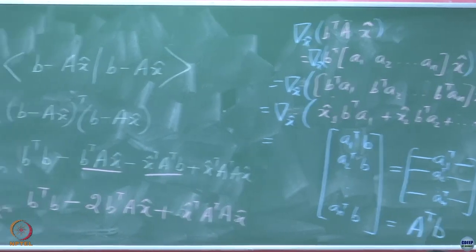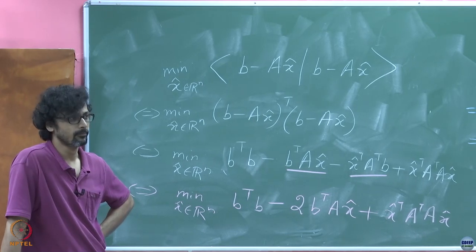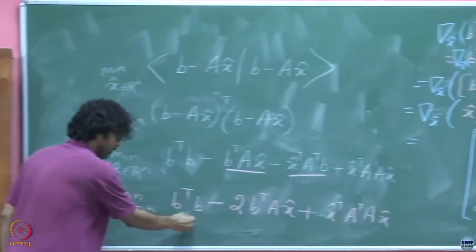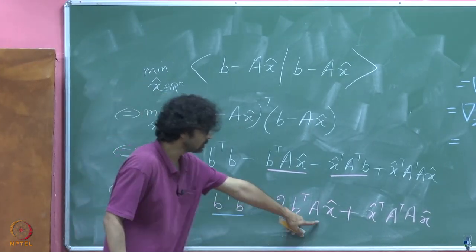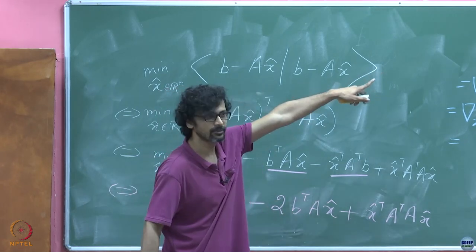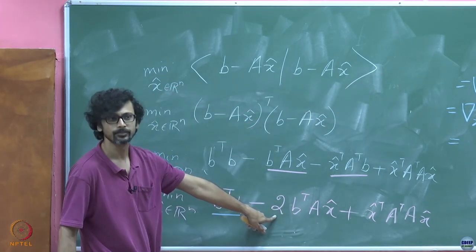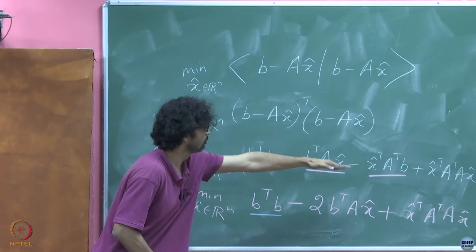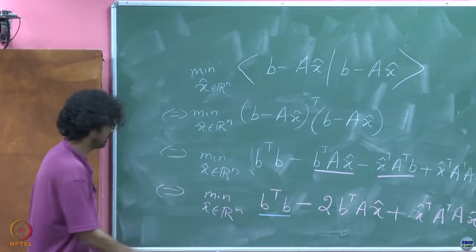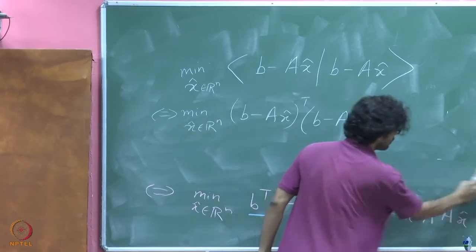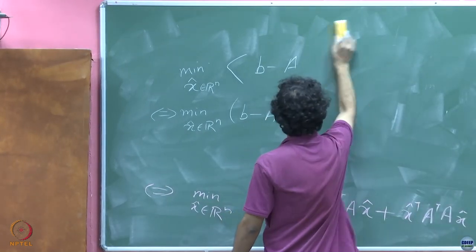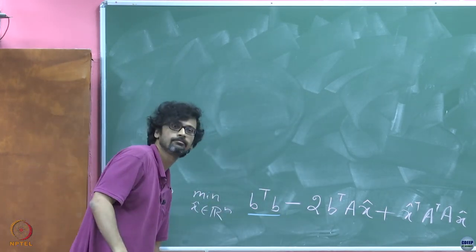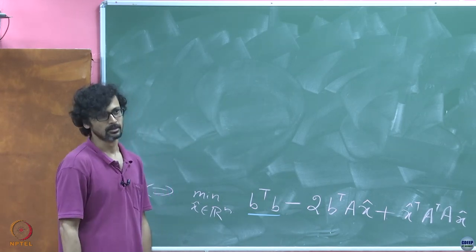So far so good. We have figured that the constant term b^T b has gradient 0, and the gradient of the linear term is A^T b — but remember there is a factor of 2 sitting there. Now we are going to argue about the quadratic term x̂^T A^T A x̂ by using the chain rule.